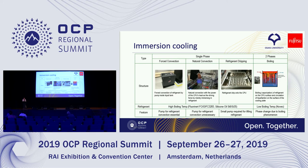There are three typical single-phase methods. From the left, the first one is the forced convection. This method is the most standard and stable immersion cooling method, characterized by a high input power limit. However, the power of the pump causes the PUE to deteriorate. The second one is the natural convection method. It doesn't use a pump or a fan for refrigerant convection, and achieves excellent PUE values — in our experiment, we achieved 1.02. However, since the convection of the refrigerant depends only on the upward flow caused by heat generation of the CPU, the upper limit of power input to the CPU is very low.